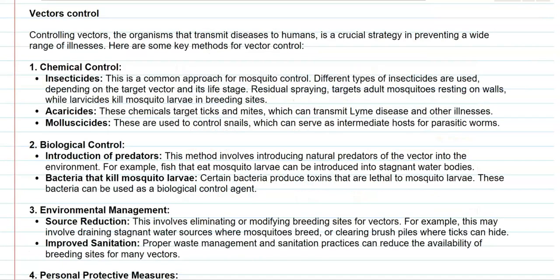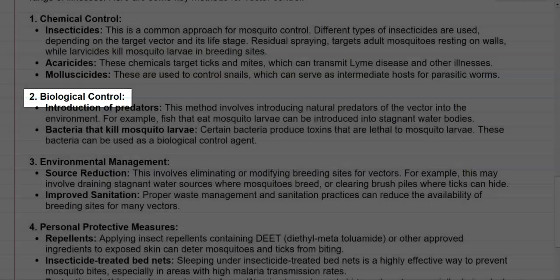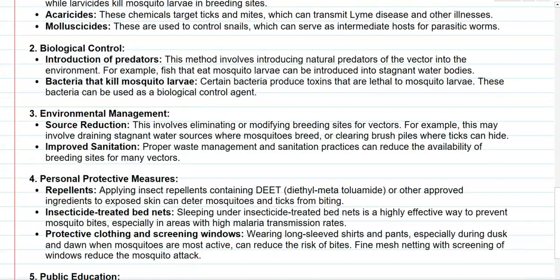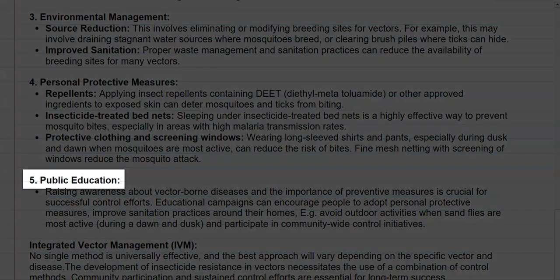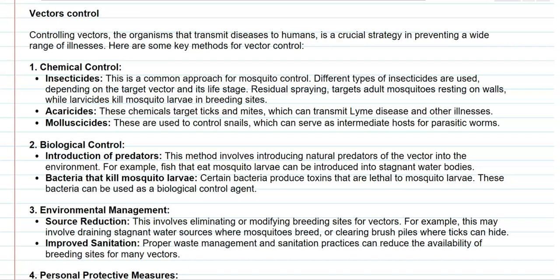Finally, we look at the methods involved in vector control, which is a very important and crucial strategy in preventing the wide range of illnesses caused by the spread of these vectors. Various methods have been developed to control vectors, broadly classified into chemical control methods, biological control, environmental management, personal protective measures, and public awareness campaigns.